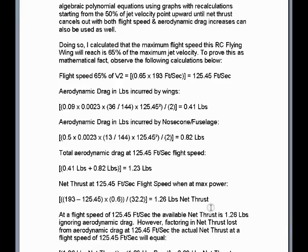If we add up the aerodynamic drag incurred at 125.45 feet per second flight speed at the wings and at the fuselage/nose cone, that comes to 0.41 pounds aerodynamic drag plus 0.82 pounds aerodynamic drag, to equal a total overall aerodynamic drag of 1.23 pounds opposing the flying wing's forward motion and its net thrust.